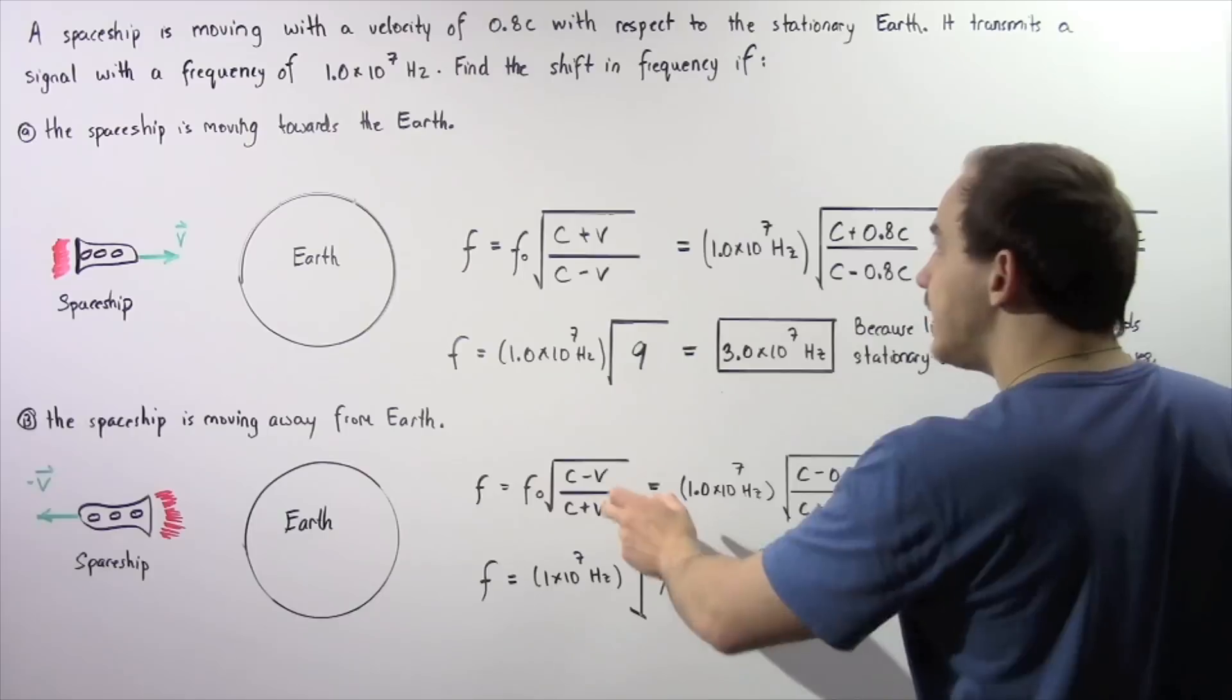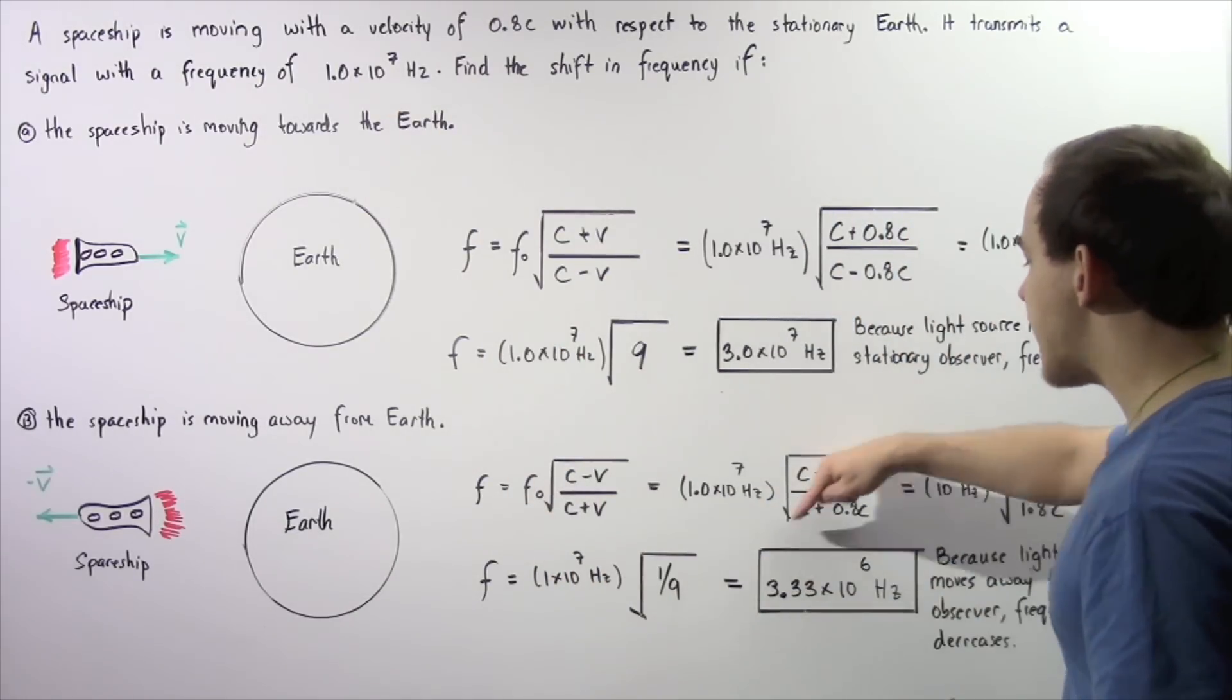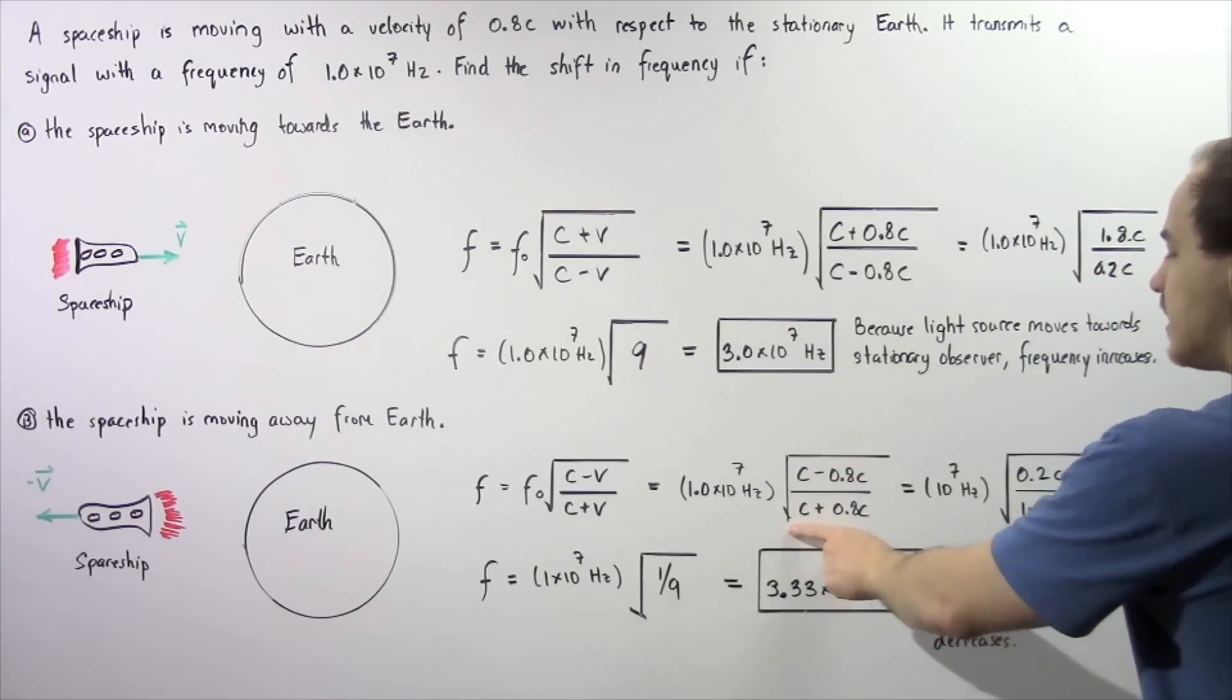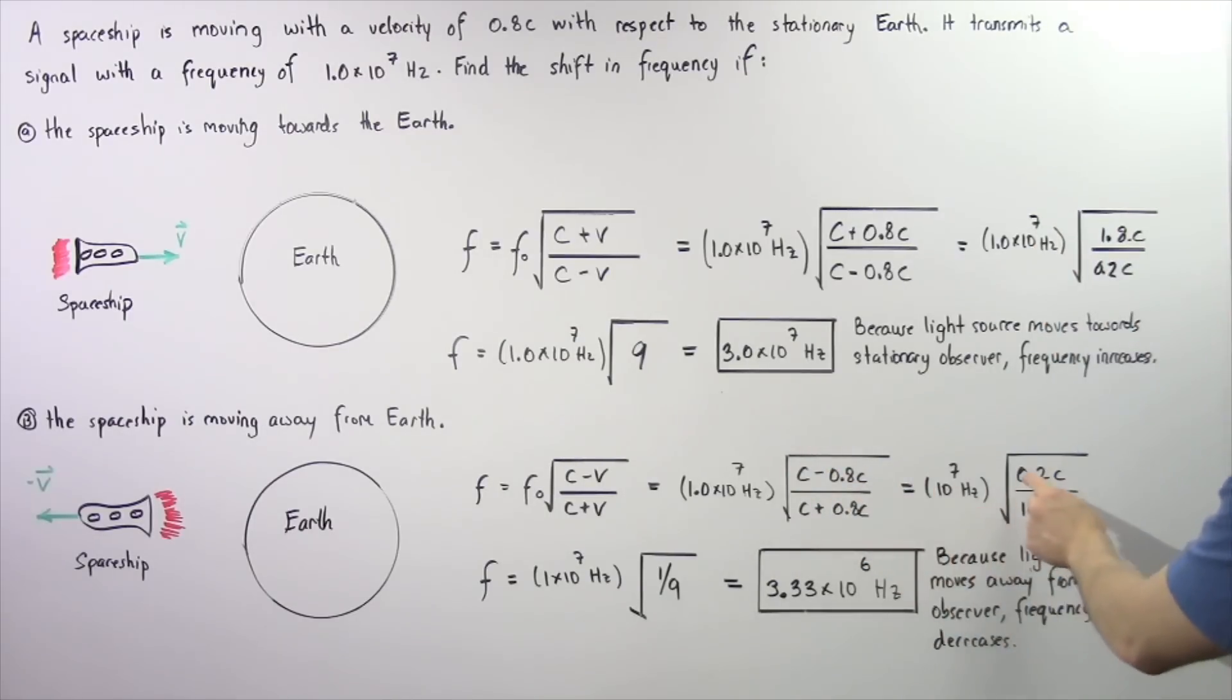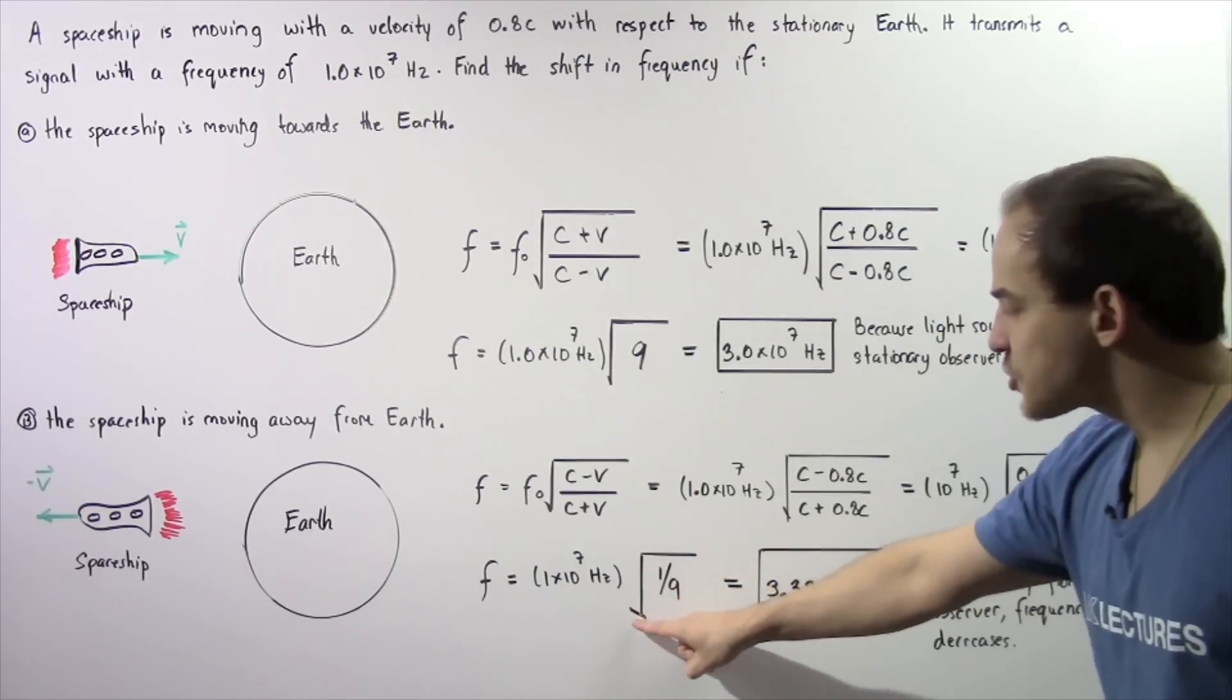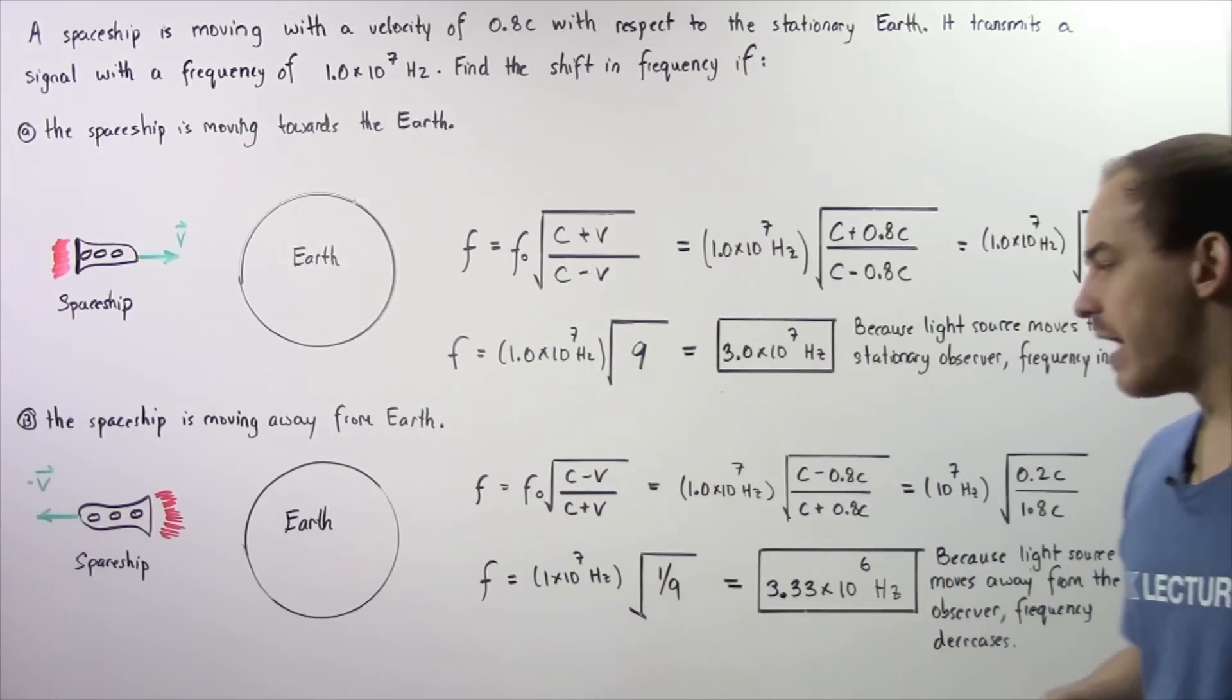We plug in this quantity for f0 and multiply by the square root of c minus 0.8c divided by c plus 0.8c. The top becomes 0.2c, the bottom becomes 1.8c. Once again, we cross out the c's and this quantity becomes 1 divided by 9, and the square root of 1 divided by 9 is 1 divided by 3.